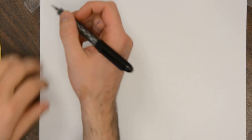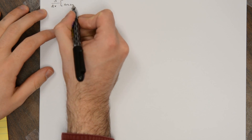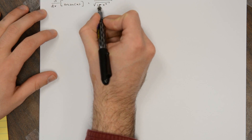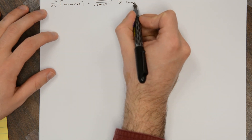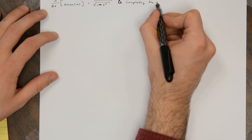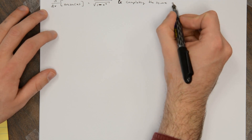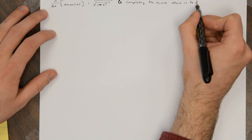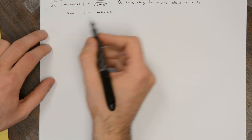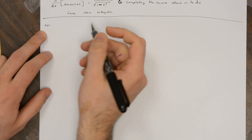We've seen that completing the square and using the fact that the derivative of arcsine of x is 1 over the square root of 1 minus x squared is a useful combination — it allows us to do some new integrals. Now I want to do a sort of interesting example that I stumbled upon. I'm going to do two integrals and then observe something interesting about them.